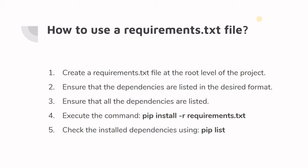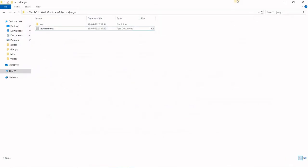The next point is to execute the command: pip install -r requirements.txt. This is the command used to install all the dependencies listed in the requirements file, and we are going to see this right away.